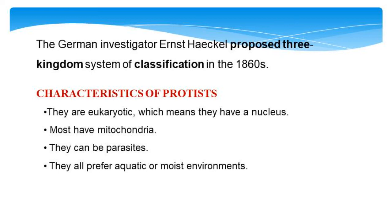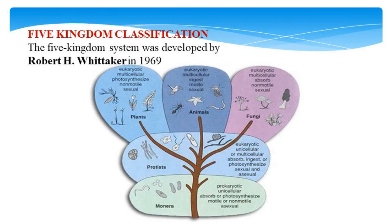Characteristics of Protista: they are eukaryotic, meaning they have a nucleus. Most of them have mitochondria. They can be parasitic, and they all prefer an aquatic or moist environment for their growth.